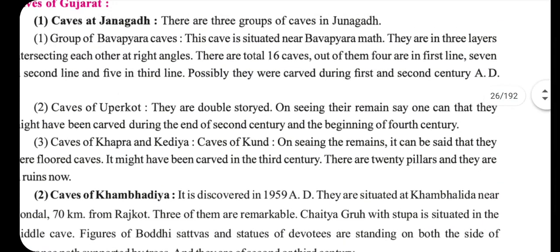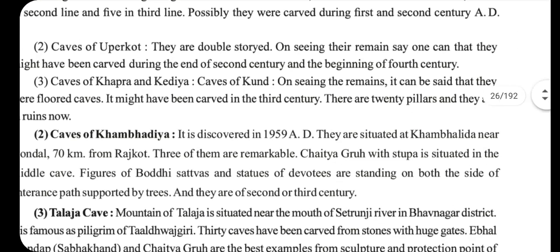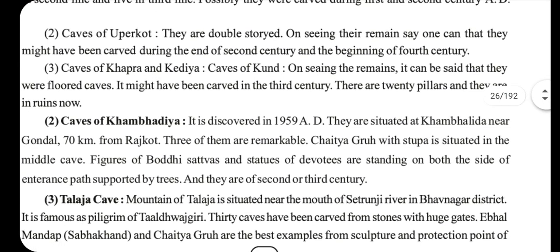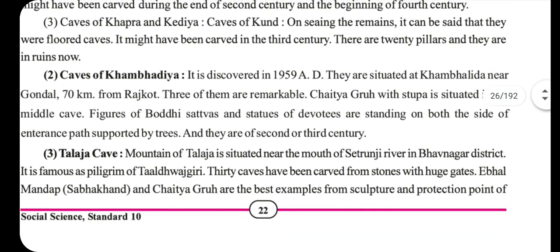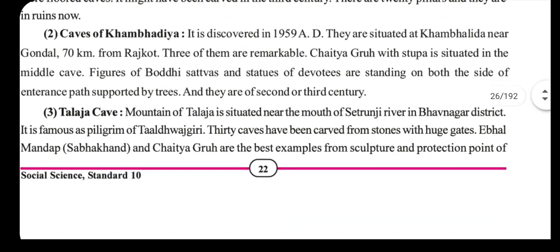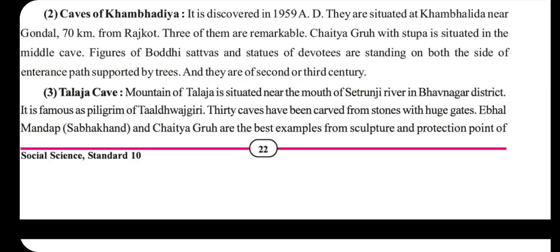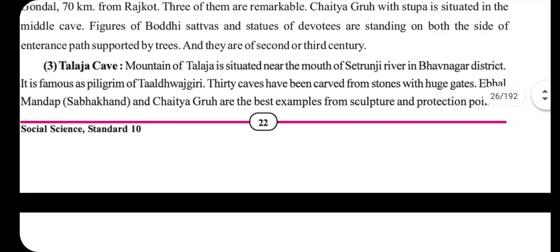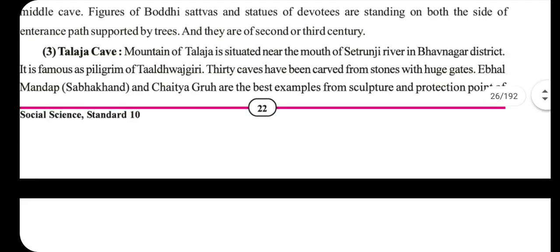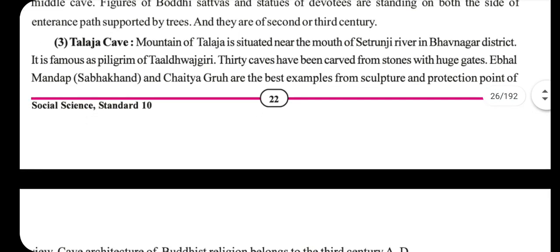The second category is the Caves of Khambhalida, situated 70 km from Gondal in Gujarat. There are three remarkable caves here. A chaitya-griha with a stupa is situated in the middle cave, and figures of Bodhisattvas and statues of devotees standing on both sides are also present.